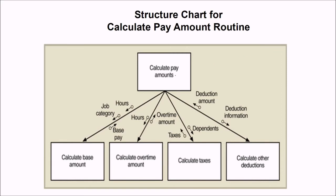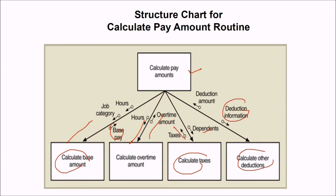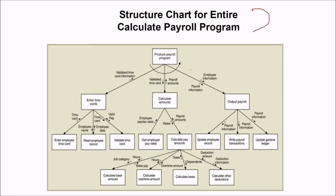As an example, consider a structure chart for a calculate pay amount routine. To calculate pay, it passes hours and job category. The calculate base amount module returns the base pay; calculating overtime needs hours and returns the overtime amount; calculating taxes takes dependents and returns taxes; calculating other deductions takes deduction information and returns the deduction amount. This is the structure chart for the entire calculate payroll program, showing an iteration with sub-modules and data flow.